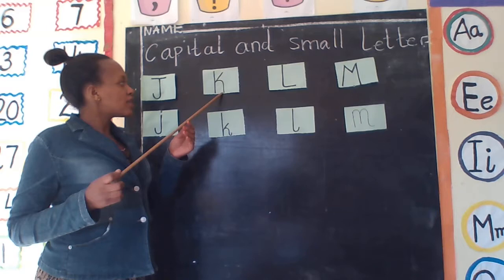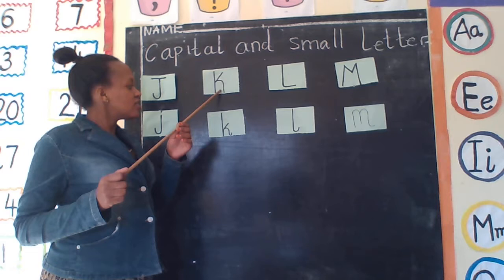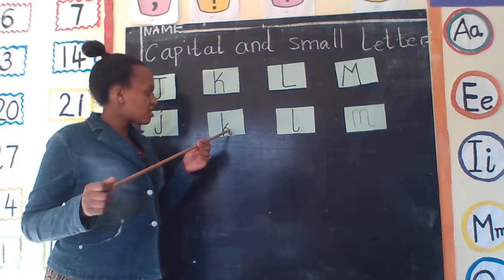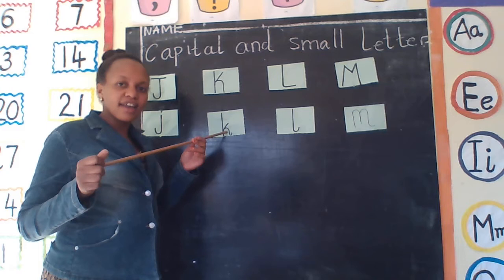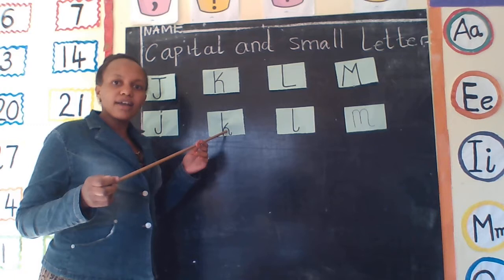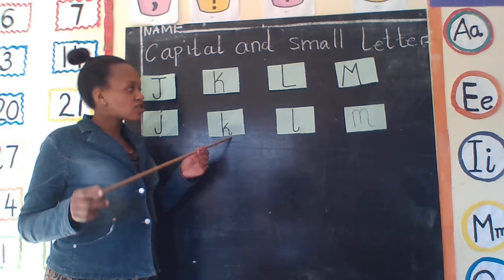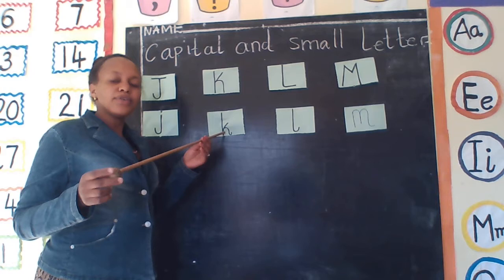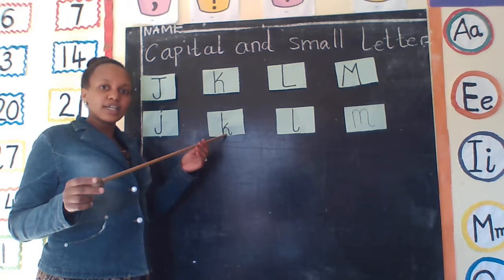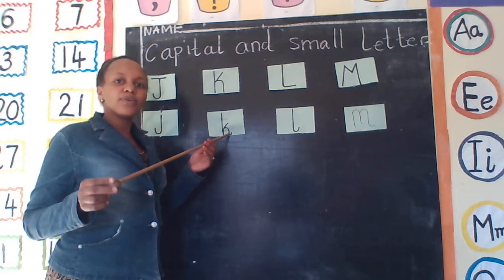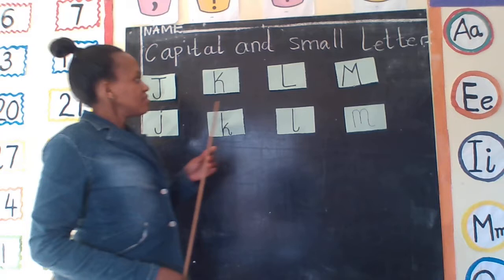We have another letter. This is capital letter K. Everyone say capital letter K. Very good. And the small letter K — also this is small letter K. Everyone say small letter K. Good. But this also is sound K. Sound K. Are we together? So, capital letter K, small letter K, and sound K. This is letter and also is sound. We call small letter K and also is sound K. Are we together, my friend?